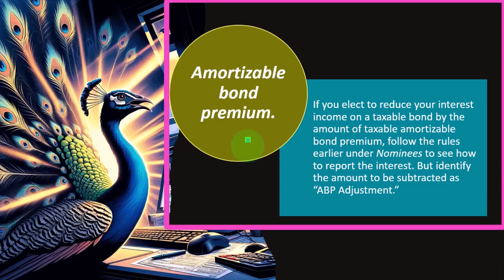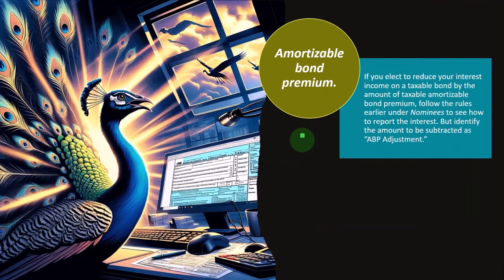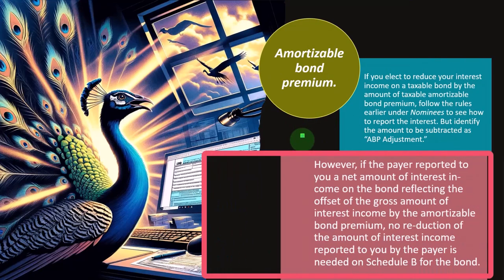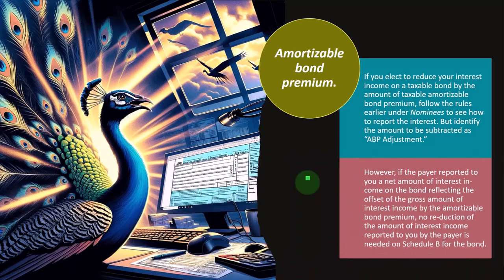If you elect to reduce your interest income on a taxable bond by the amount of taxable amortizable bond premium, follow the rules under nominees to see how to report the interest, but identify the amount to be subtracted as ABP adjustment. You're telling the IRS what you're doing and why, and how it ties into the 1099. However, if the payer reported to you a net amount of interest income reflecting the offset of the gross interest by the amortizable bond premium, no reduction of the interest income reported by the payer is needed on Schedule B for the bond.